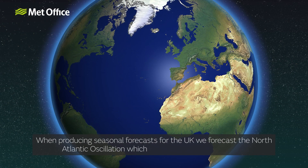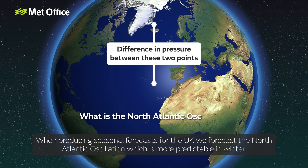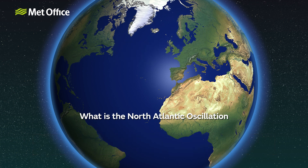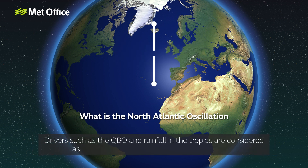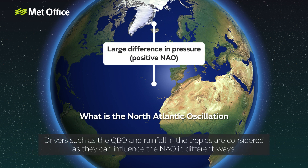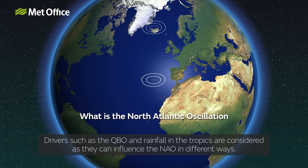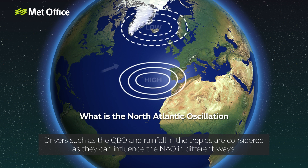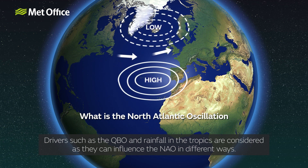When producing seasonal forecasts for the UK, we forecast the North Atlantic Oscillation, which is more predictable in winter. Drivers such as the QBO and rainfall in the tropics are considered as they can influence the NAO in different ways.